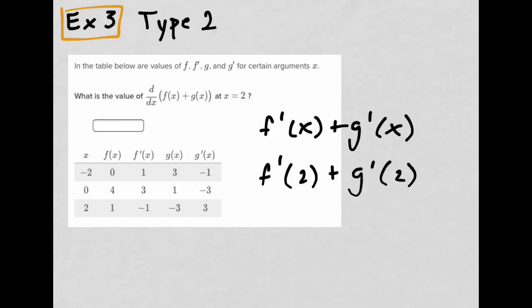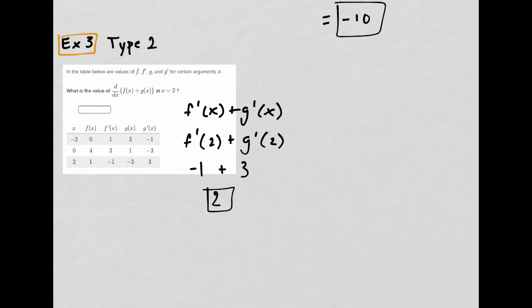Okay. f prime of 2. f prime of 2 is -1. f prime of 2 is 3. So I get positive 2. Hopefully that's what you got. This is easy. Hopefully, now.